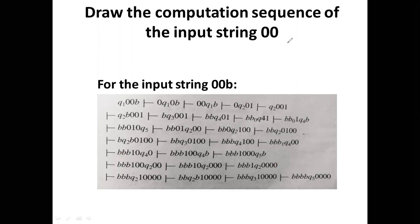First, understand what an ID (instantaneous description) is. Each ID is represented as alpha beta gamma, where beta is the current state, alpha is the left sequence under the read-write head, and gamma is the right sequence, with the first symbol of gamma being the current symbol under the read-write head.